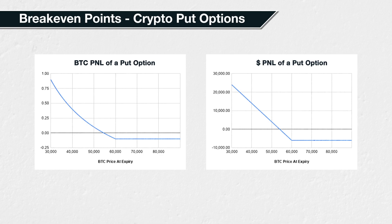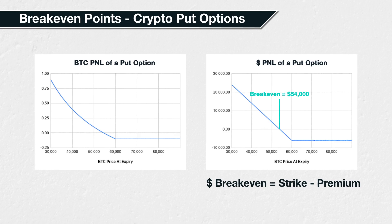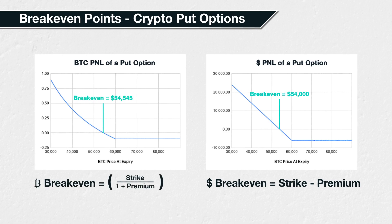For put options that use dollars as collateral, the break-even point is simply the strike price minus the premium paid. For cryptocurrency put options though, you need to use the following formula: the strike price divided by one plus the premium. This time it is the premium amount in bitcoin per contract that we use in the calculation, not the dollar value of the premium.